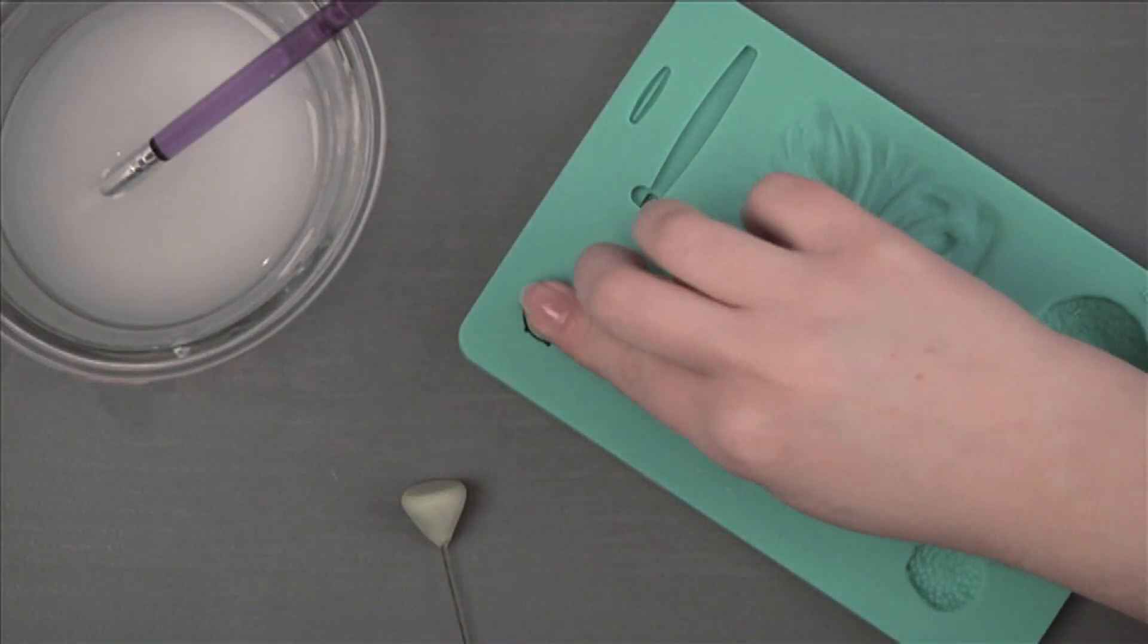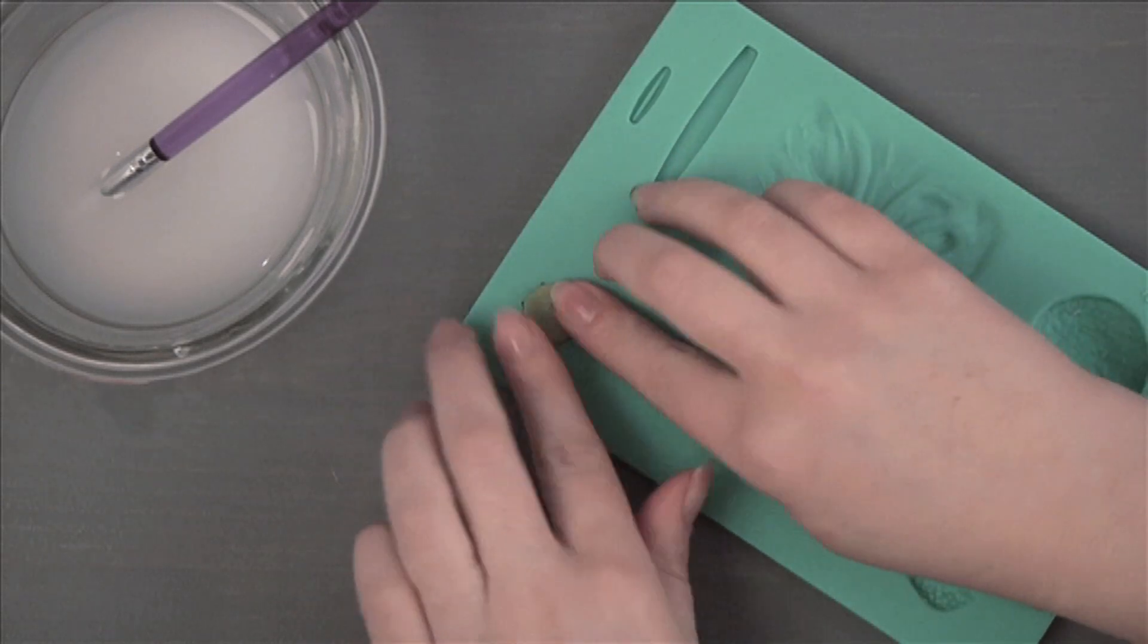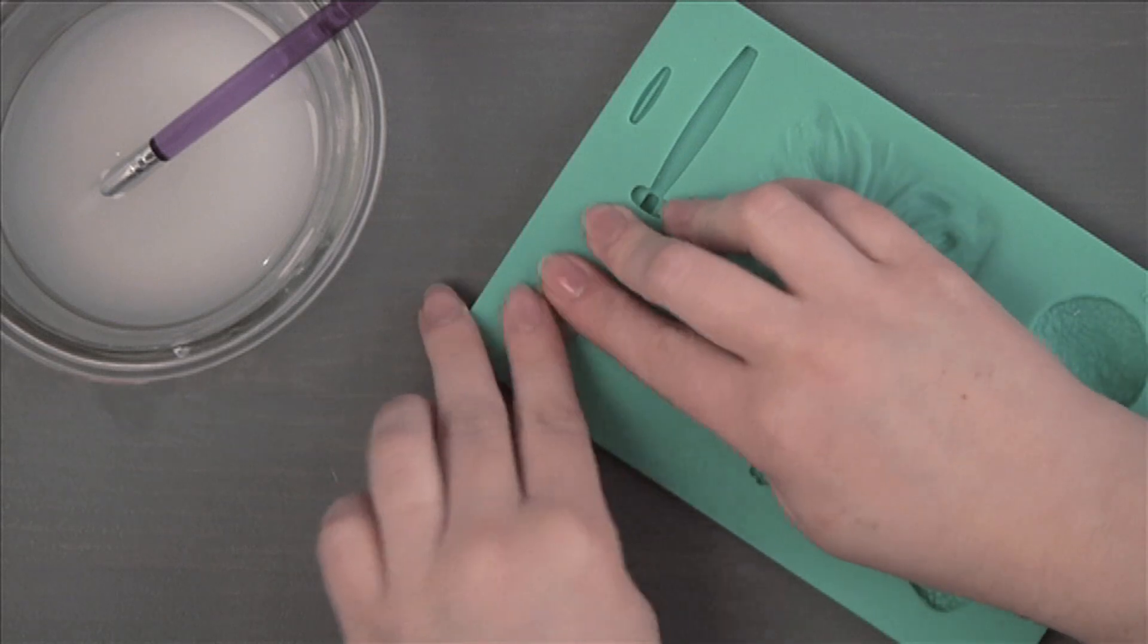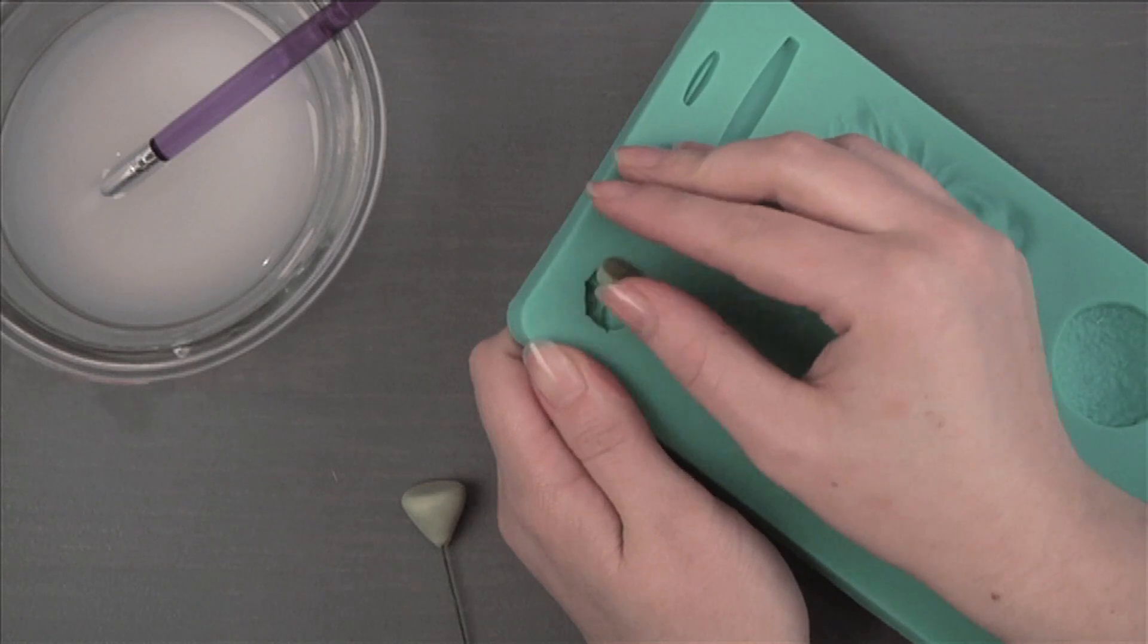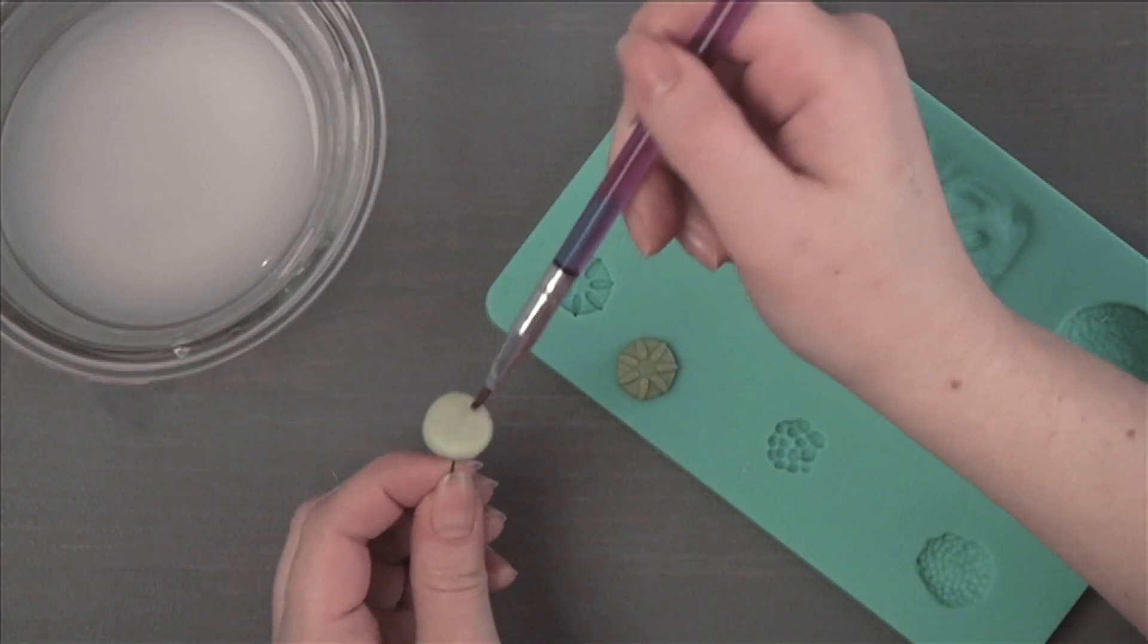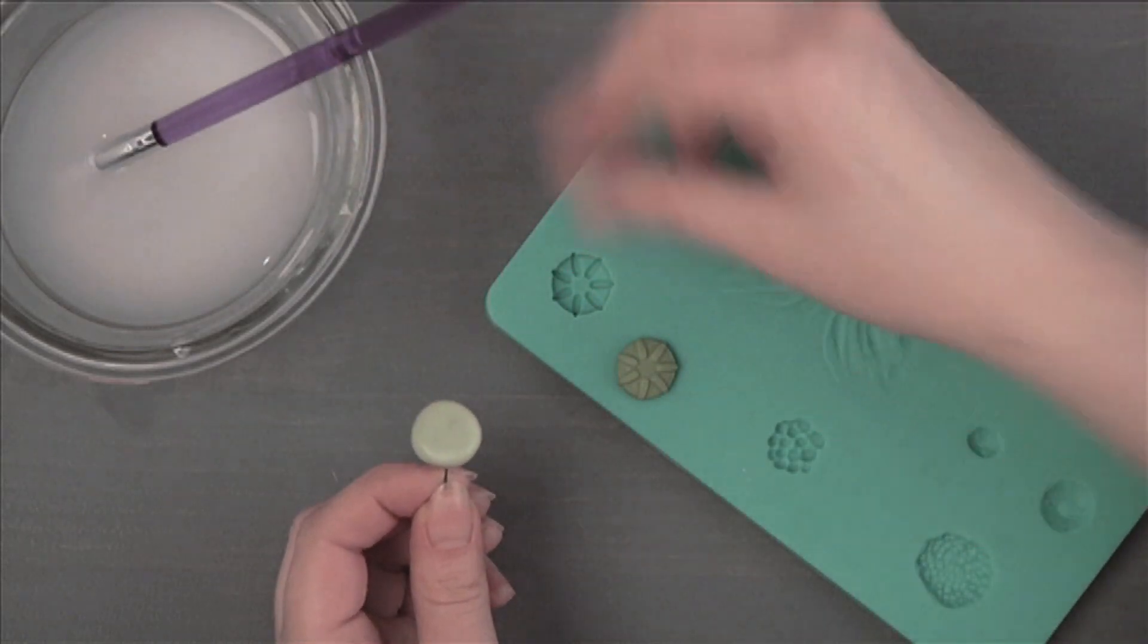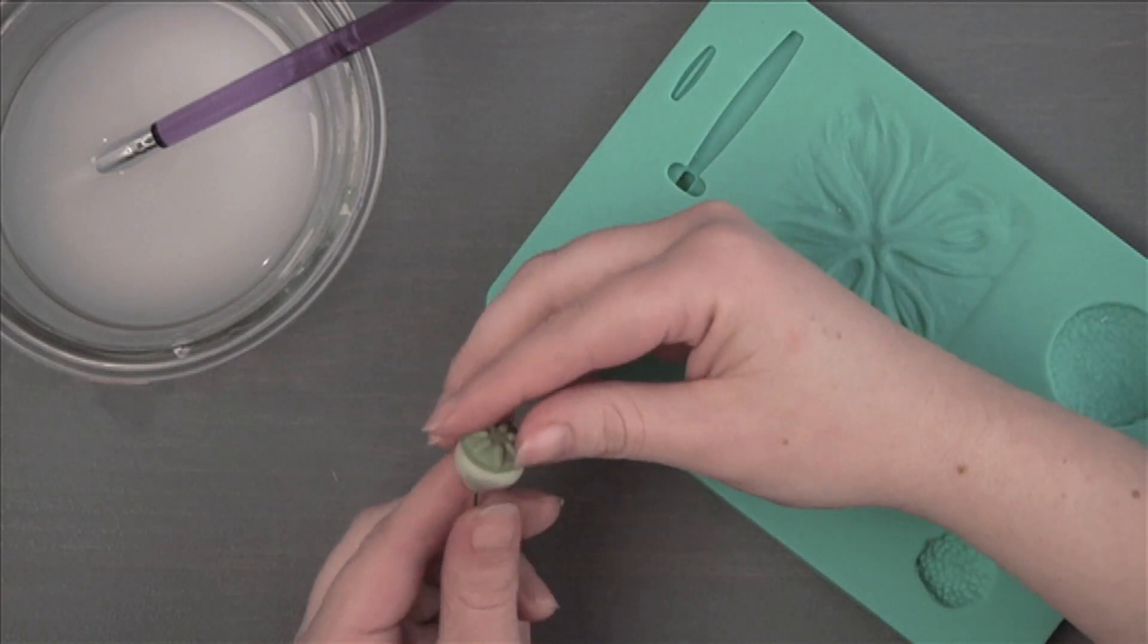Press a small amount of dark moss green gum paste into the cornstarch dusted poppy center top cavity of impression mat. Attach the poppy center to the top of the cone with gum glue adhesive. Let dry for at least 24 hours in a craft foam block.